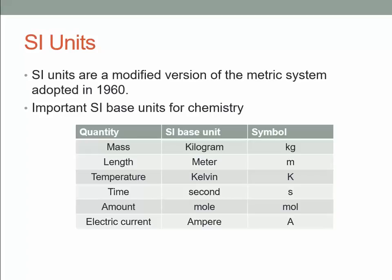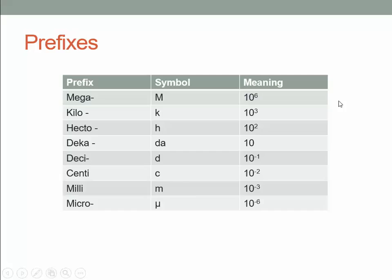There are other base units as well. Temperature uses degrees Kelvin, though we'll use Celsius quite a bit — we'll avoid Fahrenheit. The base unit for time is the second. The base unit for amount of substance is the mole, and electric current uses the ampere. There's also the candela, but we won't worry about that in this chemistry class.